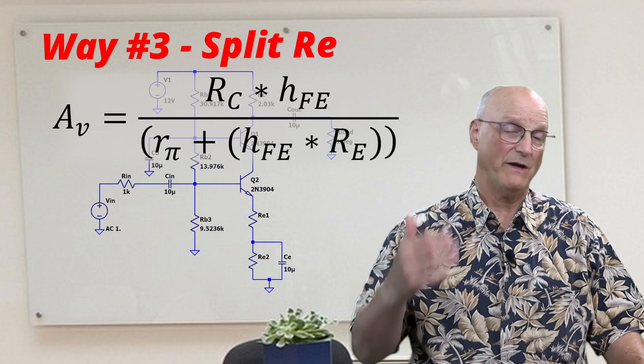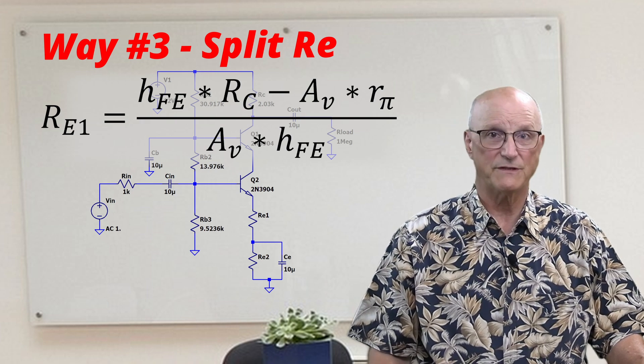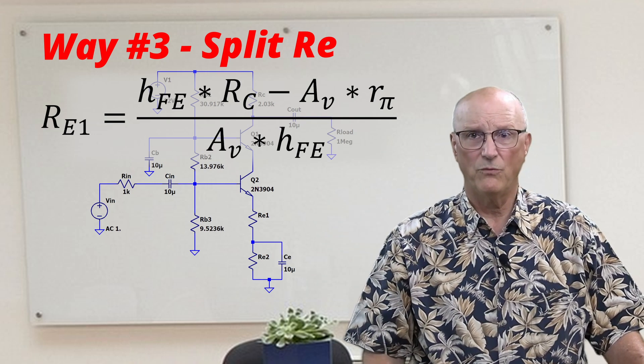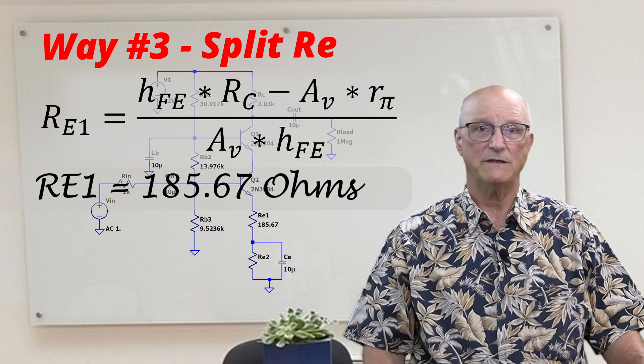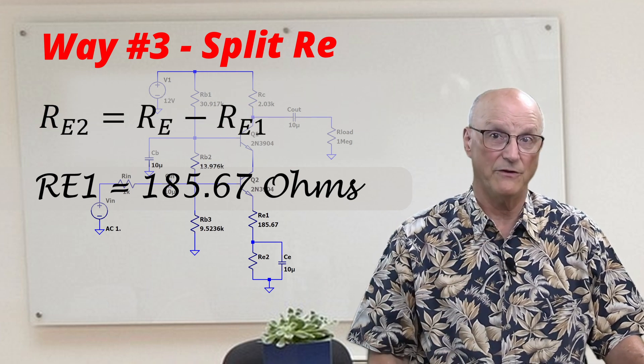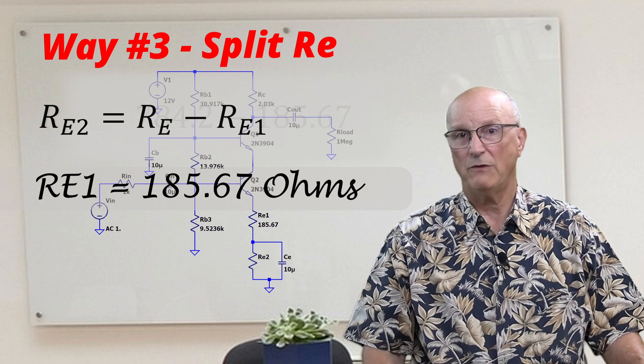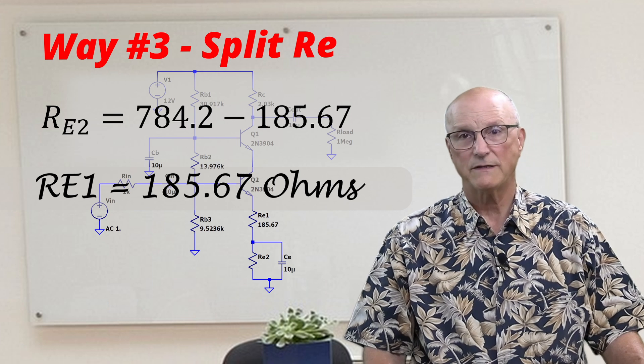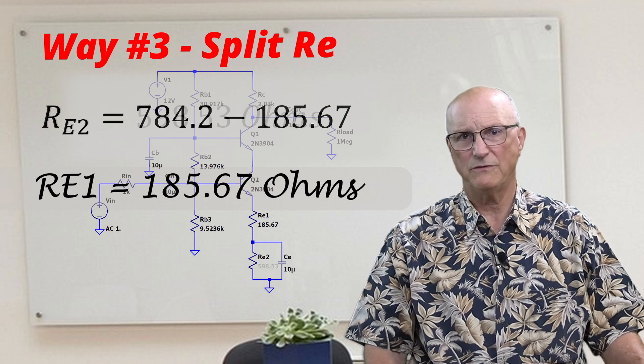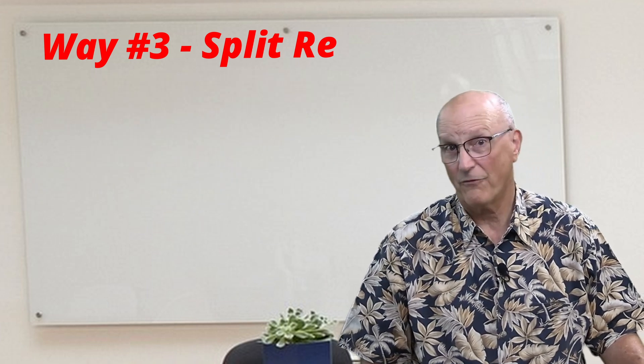We rearrange that equation to get this equation for RE1, the upper of the two emitter resistors. Putting all of our known values into this equation, we arrive at a value for RE1 of 185.67 ohms. We know that RE2 is equal to the total emitter resistor value minus the upper emitter resistor value. This means that RE2 is going to be 784.2 ohms minus 185.67 ohms, which gives us a value for RE2 of 598.53 ohms. Let's see how our circuit performs with this modification.